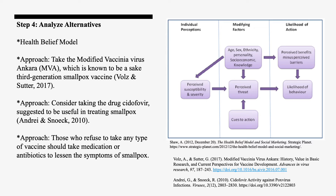Step 4: Analyze Alternatives. I used a health belief model to understand the best approaches to eradicating smallpox besides the standard vaccine. The first approach would be to take the modified vaccinia virus Ankara, known as a third-generation smallpox vaccine. The second approach would be the drug Cidofovir, suggested to also be useful. Another approach is that those who refuse the vaccine should take medication or antibiotics to lessen the symptoms of smallpox.